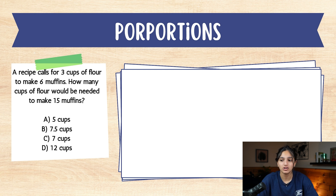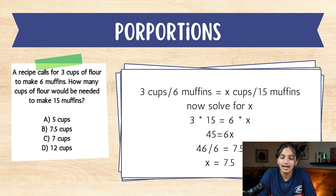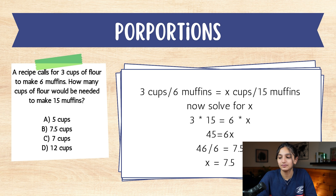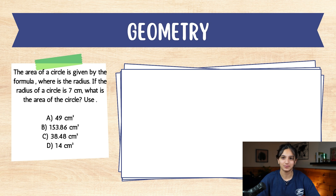Now for our fourth question about proportions. A recipe calls for 3 cups of flour to make 6 muffins. How many cups of flour would be needed to make 15 muffins? A. 5 cups. B. 7.5 cups. C. 7 cups. D. 12 cups. Take a minute to pause the video to find out what your answer is. If you said B, 7.5 cups, you are correct. To set up your equation: 3 cups / 6 muffins = x cups / 15 muffins. Cross multiply: 3 × 15 = 6x, so 45 = 6x. Divide by 6: x = 7.5.